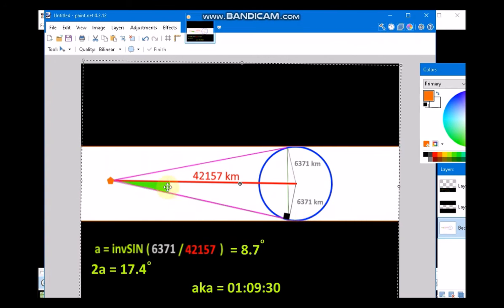This angle equals inverse sine of this side by the hypotenuse, which would be 8.7 degrees. Double of that angle would be 17.4 degrees. Multiplied by 4, you get how many minutes, and that would be the time.